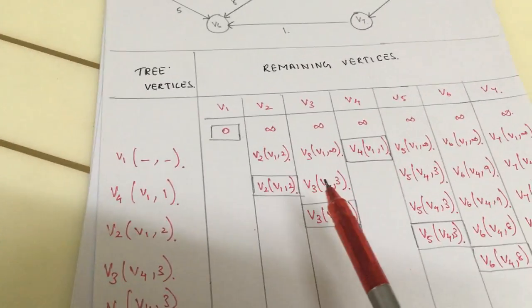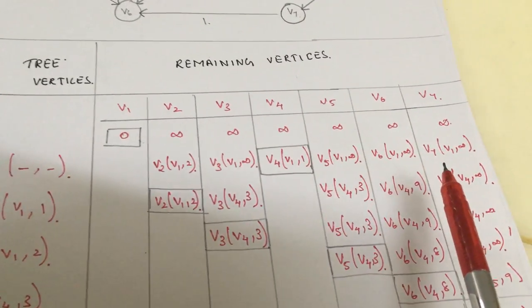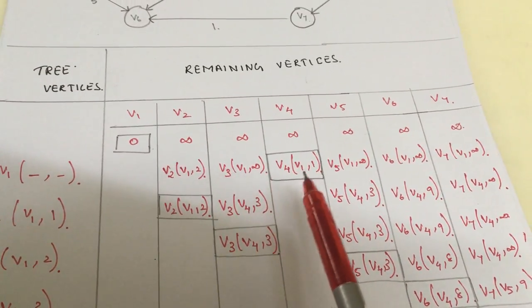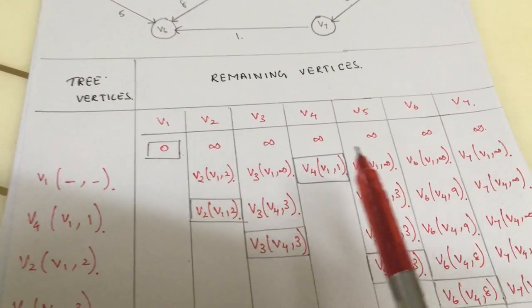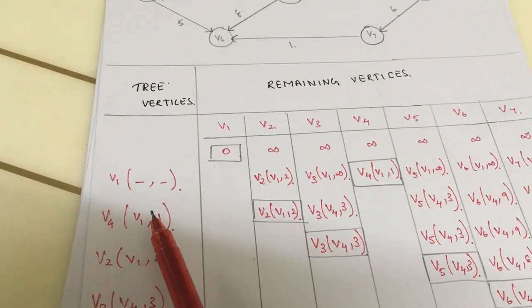Next we will consider the least value from these entries. That is v4, v1, comma, 1, which is the least value. So we will take that as the least.